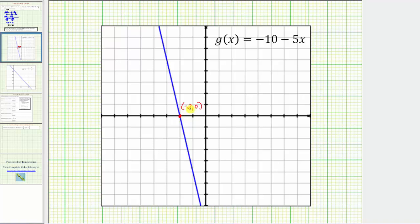This is the point (-2, 0), which tells us when the input or x value is negative two, the output or function value is zero.